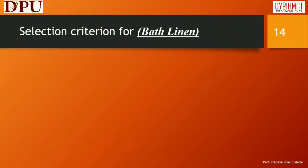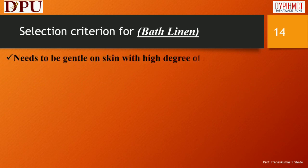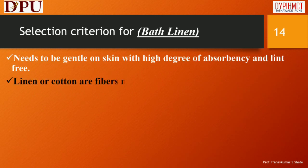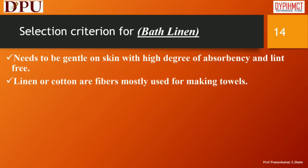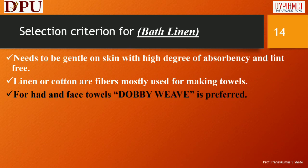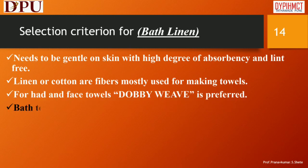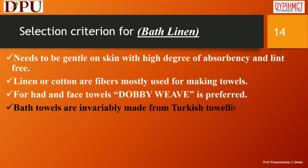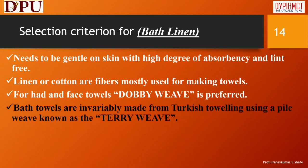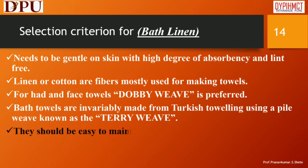Selection criterion for bath linen: Needs to be gentle on skin with a high degree of absorbency and lint-free. Linen or cotton are the fibers mostly used for making towels. For hand and face towels, dobby weave is preferred. Bath towels are invariably made from Turkish toweling using a pile weave known as the terry weave. They should be easy to maintain.